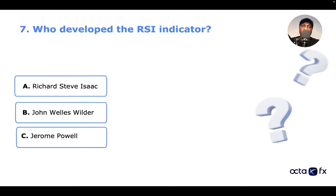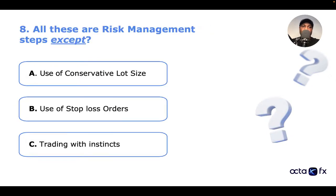Moving to question eight: all these are risk management steps except — A: use of conservative lot size. B: use of stop-loss orders. C: trading with instincts. All these are risk management steps except which one? If you know the answer, let me know.